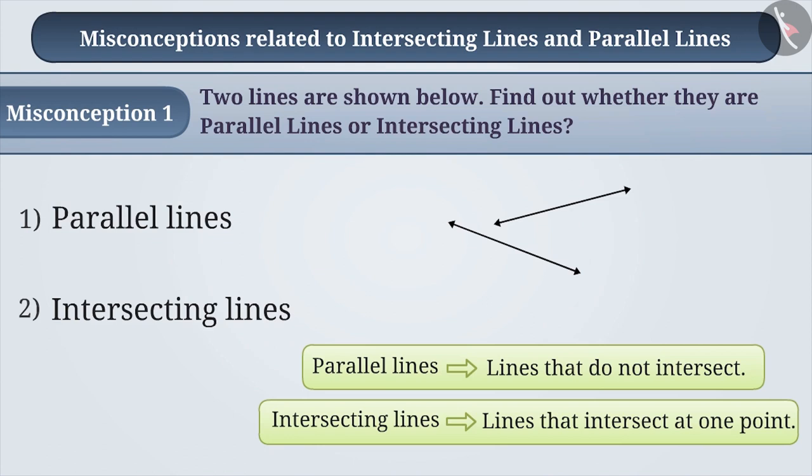As children see here that the given lines are not intersecting at any point, they think that the given lines are parallel lines. With this misunderstanding, option 1, the wrong answer is chosen.